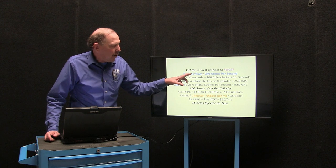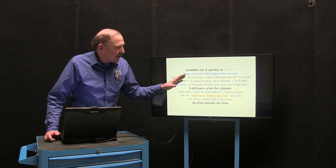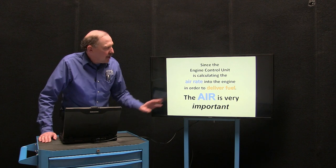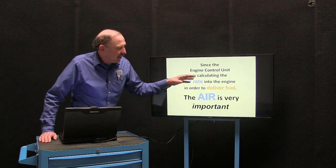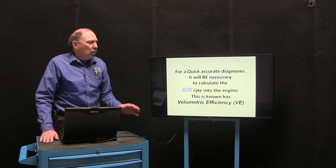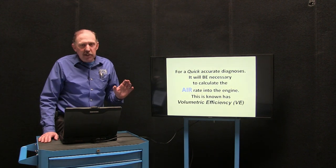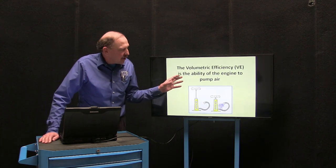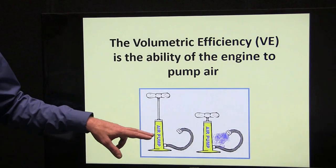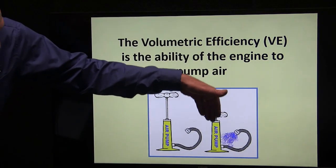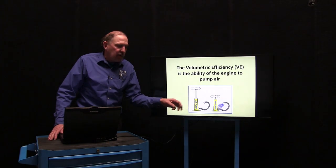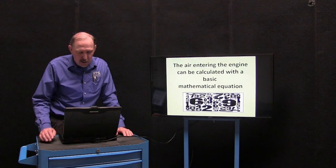Notice that I do the airflow first — I have to know it first, and then it takes the airflow and breaks it down so I know how much fuel to deliver to this engine. Since the engine control unit is calculating the air rate into the engine to deliver the fuel rate, the air becomes extremely important. For a quick accurate diagnosis, we really need to calculate the air rate going into the engine. This is what is known as the volumetric efficiency — the ability to pump air. Like a cylinder with an air pump: I pull it up, air rushes in making a large volume, then I push it down and push it out.